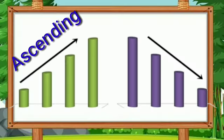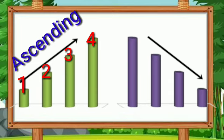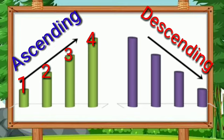Let's know what is meant by ascending order. Ascending order means the numbers are increasing upwards — smallest to biggest. Then what is meant by descending order? The numbers are decreasing downwards — biggest to smallest.